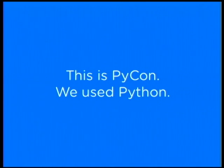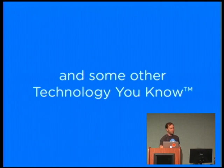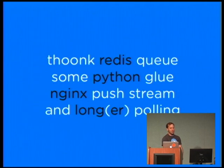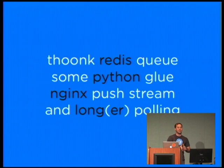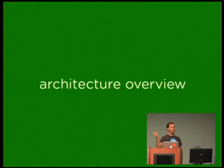Disqus is almost entirely written in Python — our core technology is a Django app. Realertime is a separate Python service, but not 100% Python. We're a small shop — 18 engineers — and we use off-the-shelf technologies to maintain that scale. Technologies include Redis, Redis pub/sub, Nginx, Thunk, and long polling.